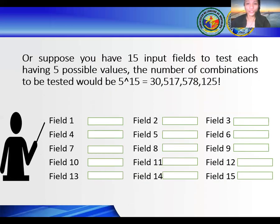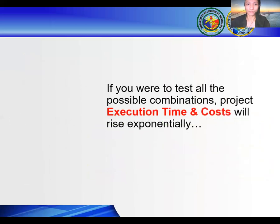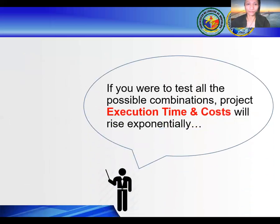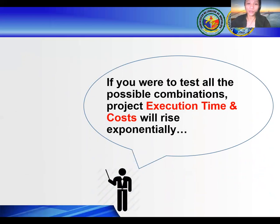Suppose you have 15 input fields to test, each having 5 possible values. The number of combinations to be tested will be 5 raised to the power of 15. If you were to test all the possible combinations, project execution time and cost will rise exponentially.